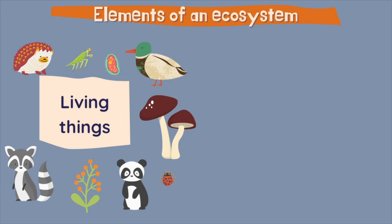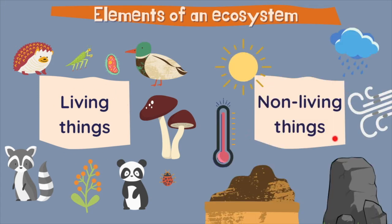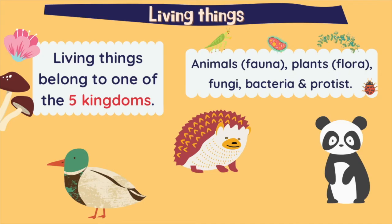We can divide the elements of an ecosystem into living things and non-living things. Living things of the ecosystems belong to one of the five kingdoms. Mostly, we have the fauna, the animals, and the flora, the plants.